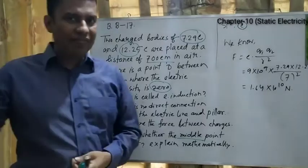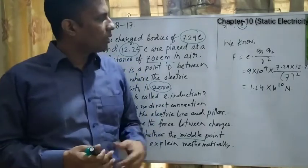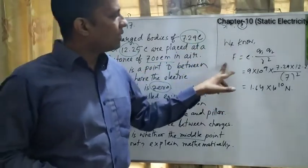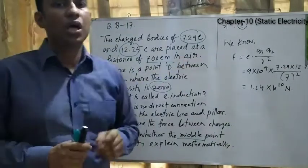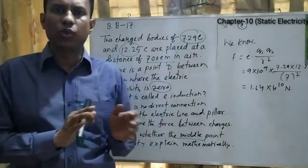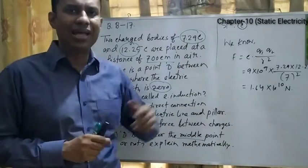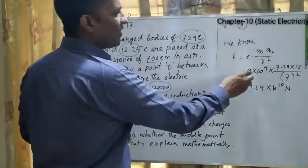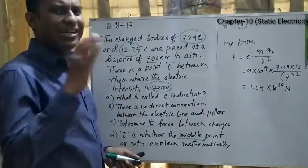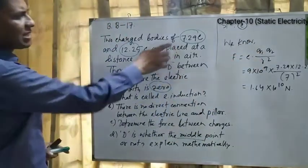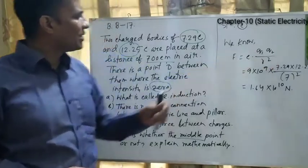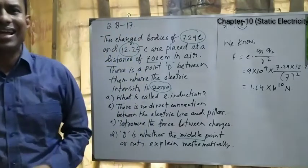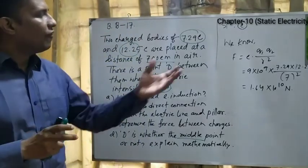To determine the force between the charges we use Coulomb's law: F = k × q1 × q2 / r², where k = 9 × 10⁹. Q1 = 7.29 Coulomb, Q2 = 12.25 Coulomb. The result is 1.64 × 10¹⁰ Newton. This is the force between the two charges.